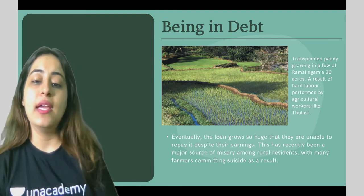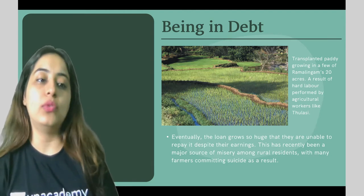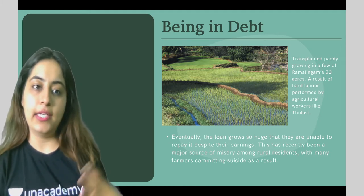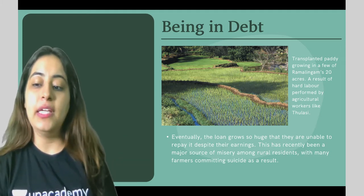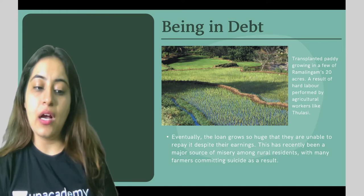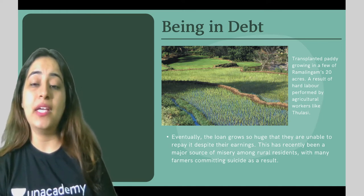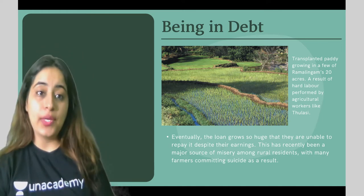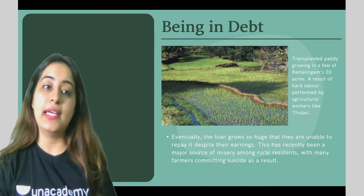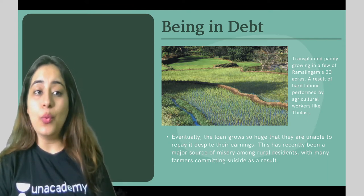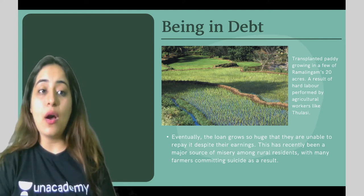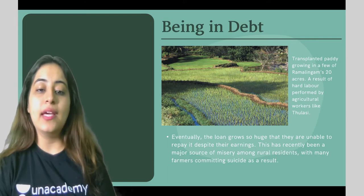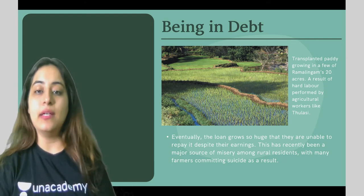What happens is that because farmers take loan upon loan, the debt grows so huge that they are unable to repay it despite their earnings. The loan becomes so large that repayment becomes impossible under any circumstances.